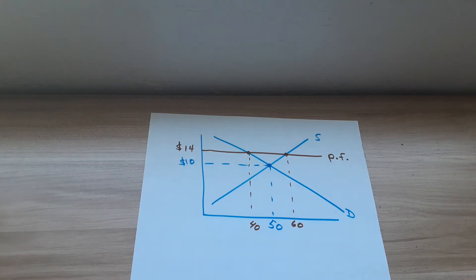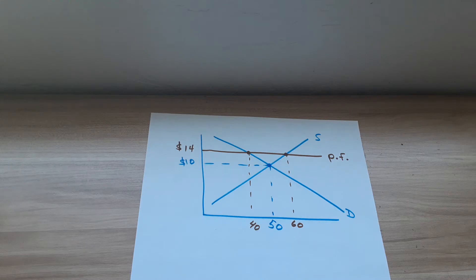Producer surplus is the difference between what a business was willing to sell you a product for and the going market price. So let's say a business is willing to sell you something for $3, but supply and demand determines the price is $7. They get to sell it for four extra dollars.